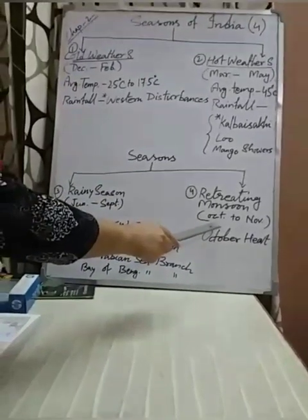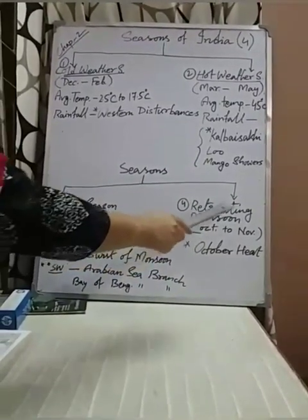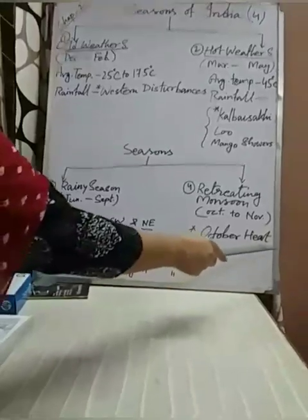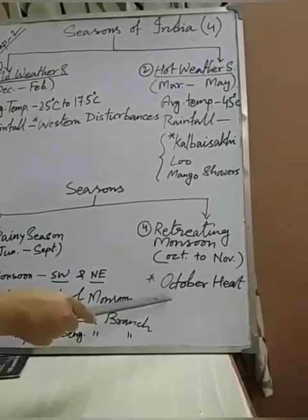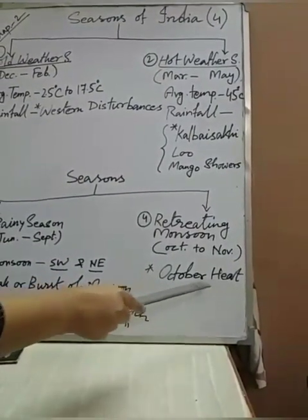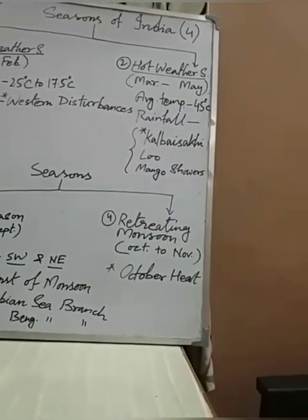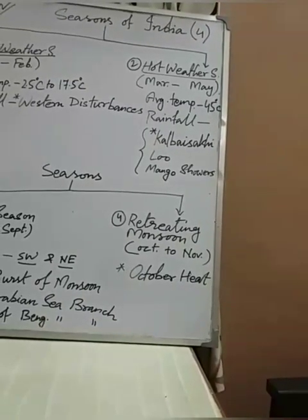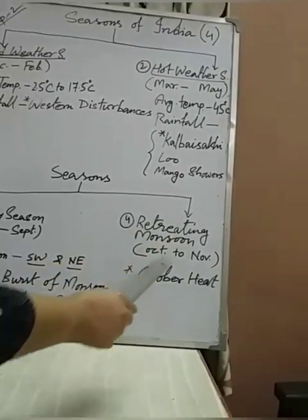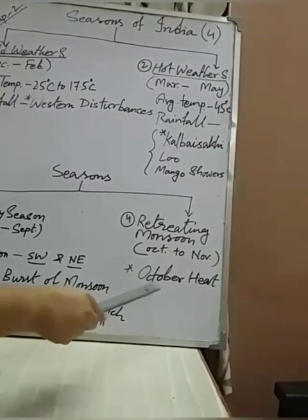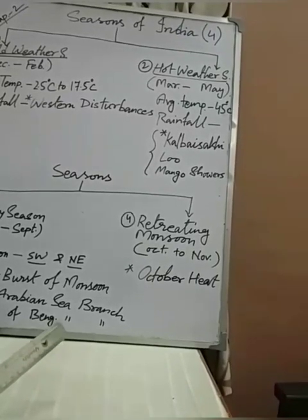The duration of retreating monsoon season is October to November. We cannot see much changes during this period, so this period can be explained with the term 'October heat.' During this time, rainfall is very low and temperature is moderate. October heat means the sky is completely clear and moisture is very high, which creates an oppressive type of climate — uncomfortable for us. Less rainfall occurs during this time due to the retreating southwest monsoon.